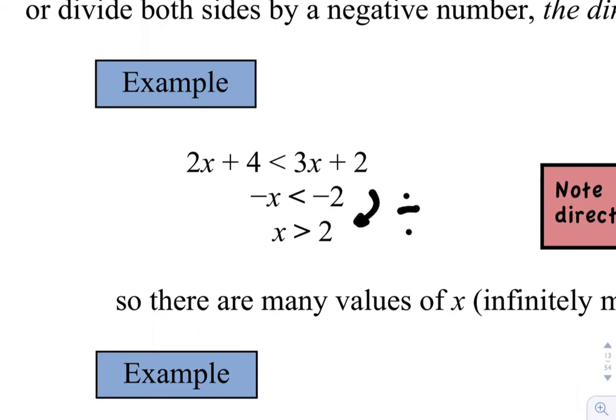So when I divide by negative 1 in an inequality we need to change the direction of the sign. Okay so notice that the sign changes direction. So if x values are greater than 2 this inequality here will be satisfied.